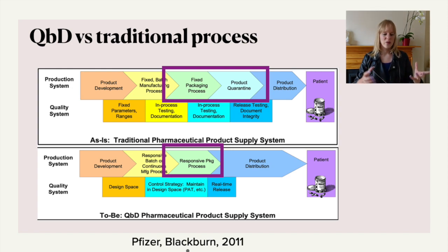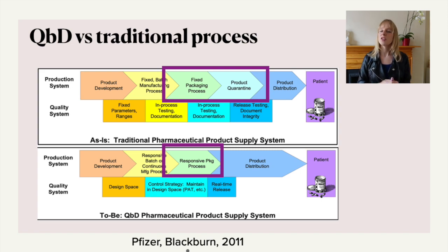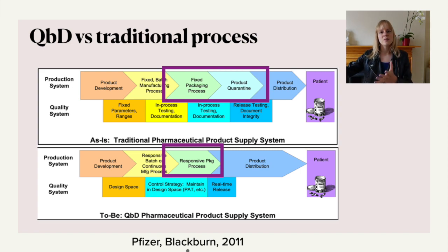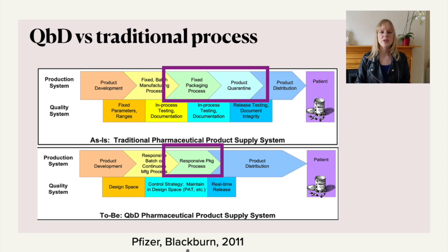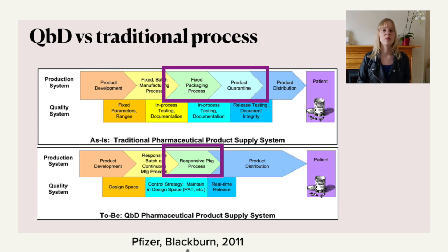For a normal production of a product this is probably okay, because it doesn't matter so much that there's a short period where you have to wait until you release it, and you can perhaps afford to have a little bit more variation in your product.